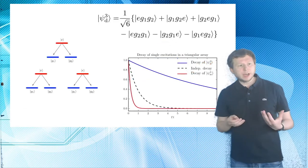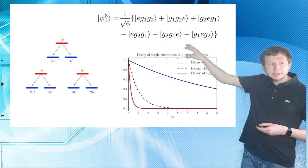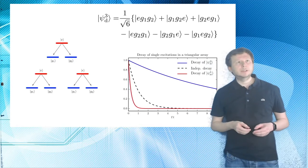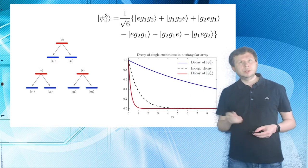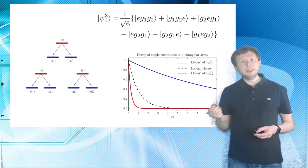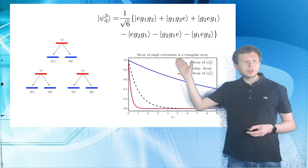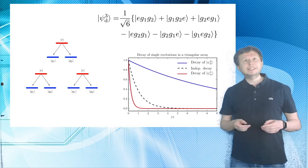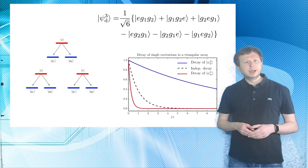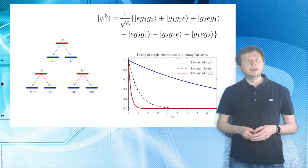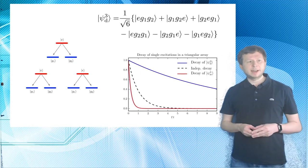And what we see now here is if we denote this state up here. So this is really the dark state that we found. And you can observe that in the upper line there is sort of all the cyclic permutations of E, G1 and G2. And in the lower line there is all the anti-cyclic permutations of E, G1 and G2. And the cyclic ones have a positive sign and the anti-cyclic ones have a negative sign.